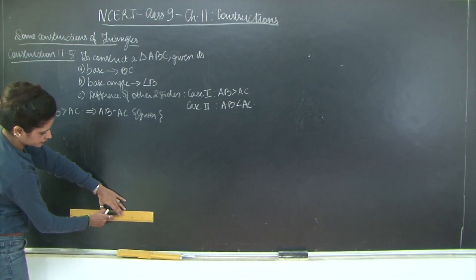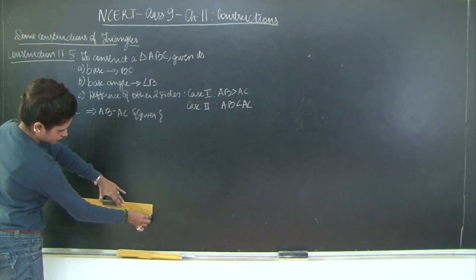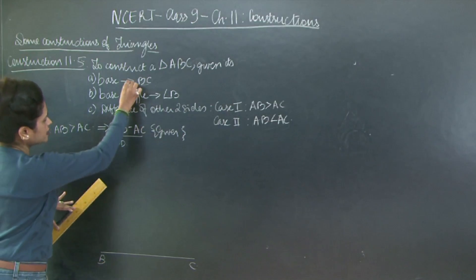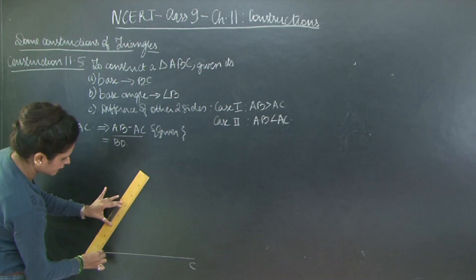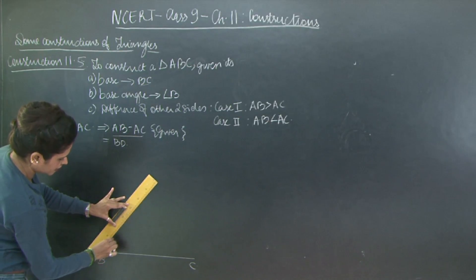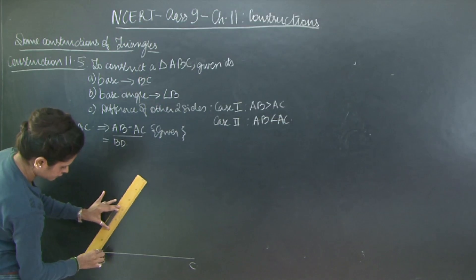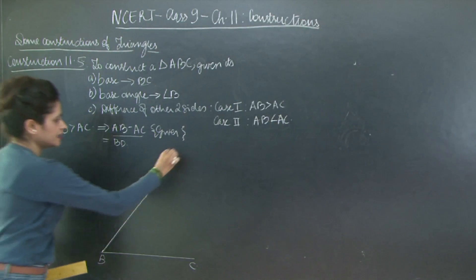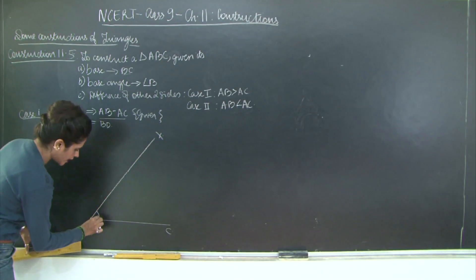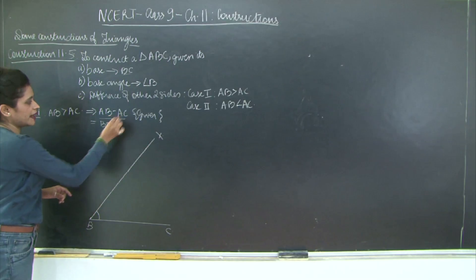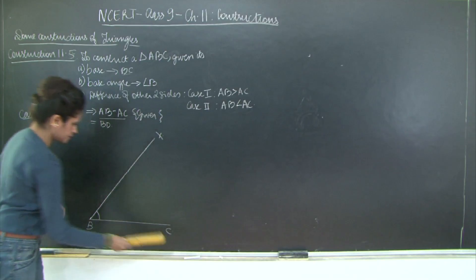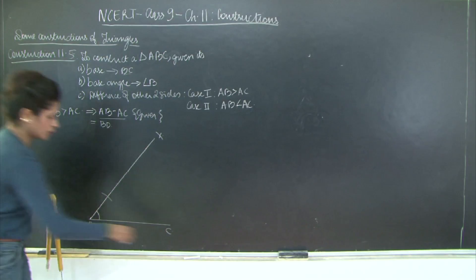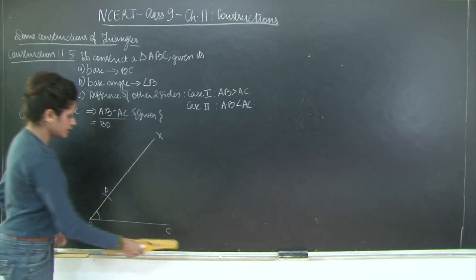Let us start with drawing the base. So I will say this is my base BC. I will mark my angle. The first step is to draw base BC, then draw angle B. So XBC is the required angle. Then we take the length AB minus AC equal to BD and cut an arc. This length BD is equal to AB minus AC, and we join D to C.